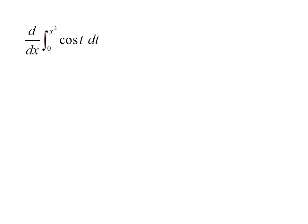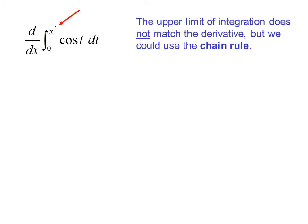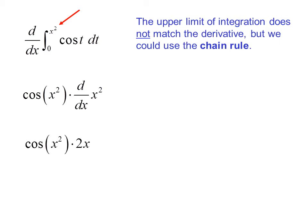The derivative with respect to x of the integral from 0 to x² of cosine(t) dt. In this case, the upper limit of integration does not match the derivative, but we could use the chain rule. So we have cosine(x²) times the derivative with respect to x of x². We put x² in where t was, then take the derivative of the upper limit. So now we have cosine(x²) times 2x, or 2x·cosine(x²).